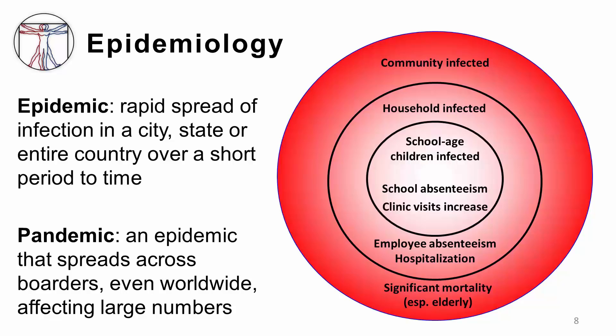Next, the virus hits adults, resulting in absenteeism from work and hospitalizations due to complications of the infection. When the virus spreads to infect an entire community, city, state, or country, significant morbidity or mortality results, especially in the elderly.